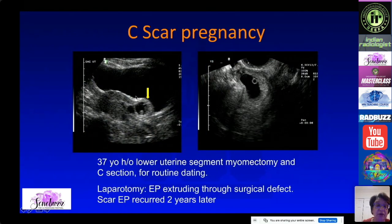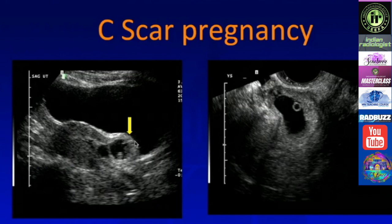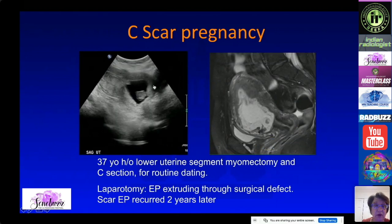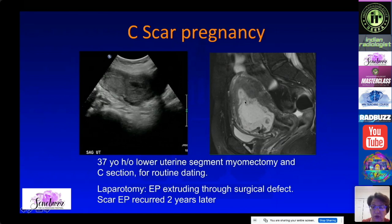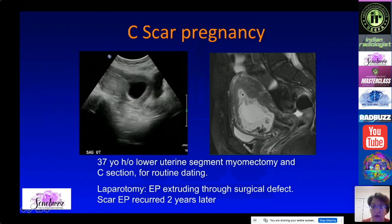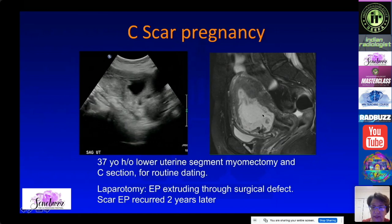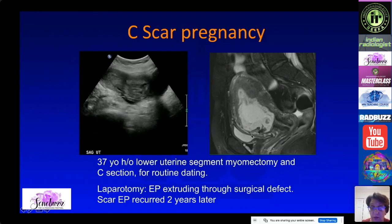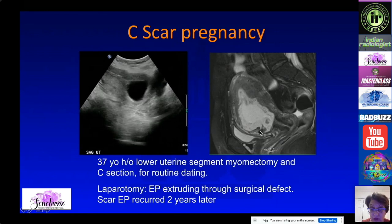In this case, a patient with prior myomectomy and c-section presented for routine dating — completely asymptomatic. You can see the abnormal implantation of the gestational sac with no myometrium between the trophoblast and the bladder. At laparoscopy the ectopic pregnancy was seen protruding into the surgical defect. MRI can also confirm implantation in the c-section scar with absent or very thin myometrium between the bladder and the gestational sac.